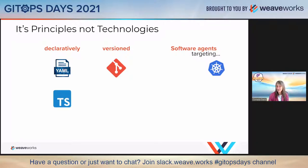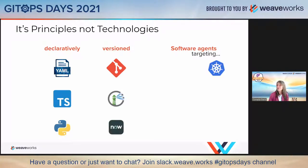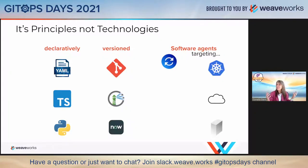You might declare your applications — Nate talked about CDK earlier — in something like TypeScript or Python rather than YAML. It still needs to be declarative, but we can use different things. We can use other sources; Flux, for example, has sources that allow you to pull from an S3 bucket. I can pull from image registries — we saw a demo of that earlier. There are a number of different sources to draw from, and the reconciliation software agents can be targeting cloud, bare metal, and more.